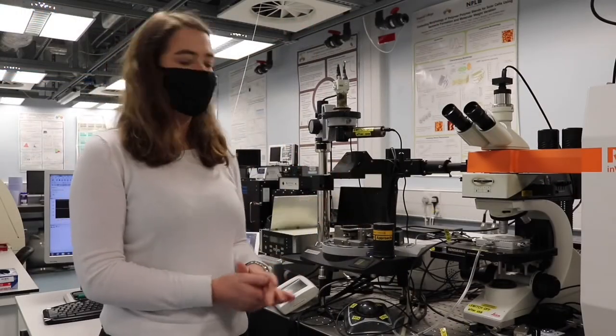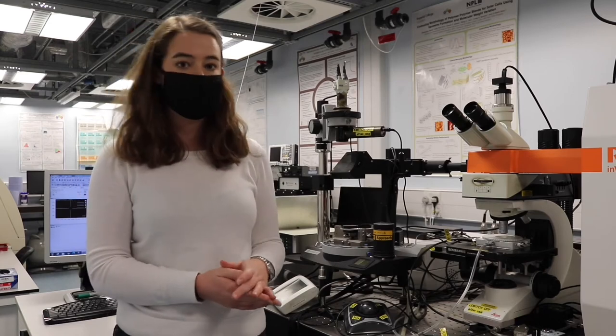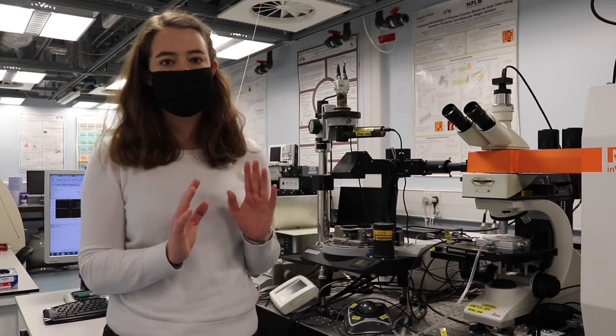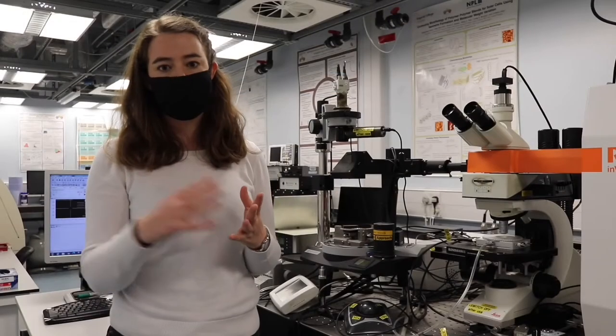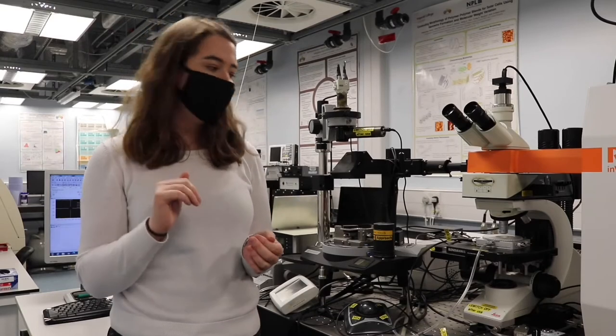This is a Raman spectrometer. We use this to measure the molecular vibrations of polymers and small molecules. It can tell us lots of information about what's happening right down on the nano scale and how the polymers are packing together or how they are interacting with other layers in our devices.